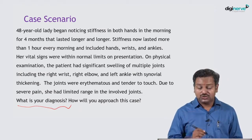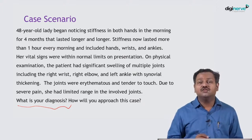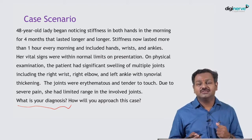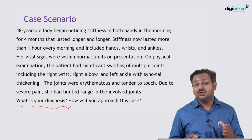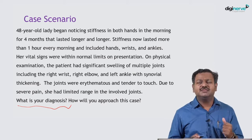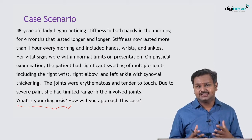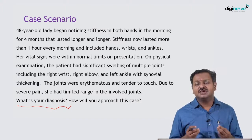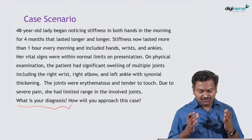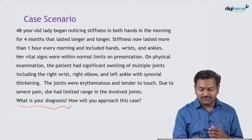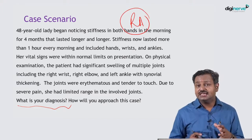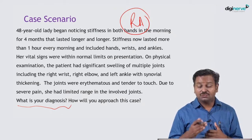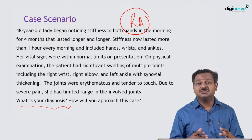The diagnosis is a subacute inflammatory arthritis — since it's going on for four months — involving the small joints of the hand, with synovial inflammation. The most common differential diagnosis is rheumatoid arthritis; other conditions include reactive arthritis, but when small joints are involved with synovial thickening, rheumatoid arthritis is the first diagnosis to consider.